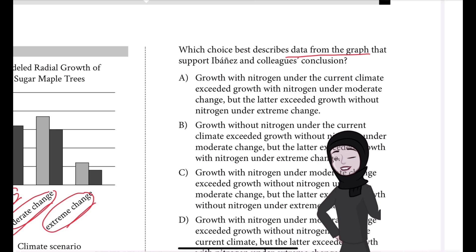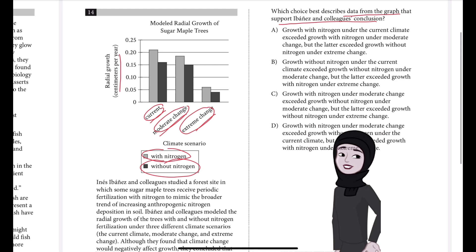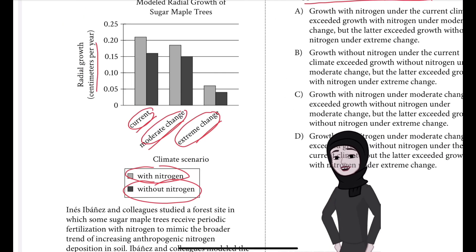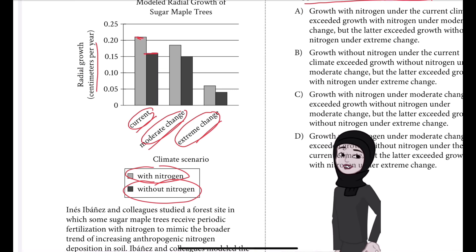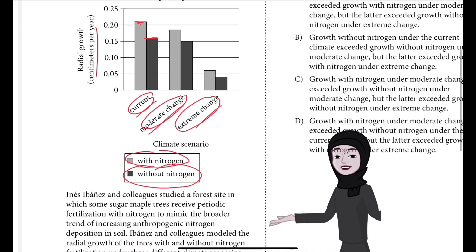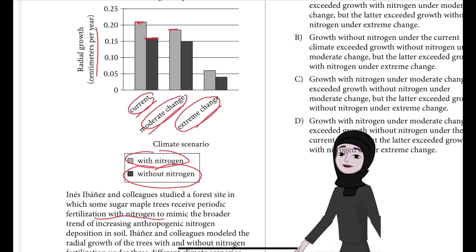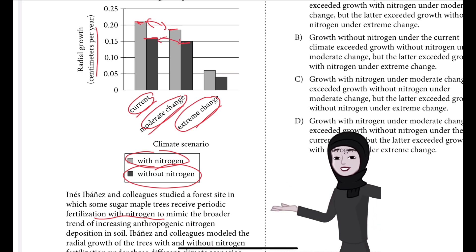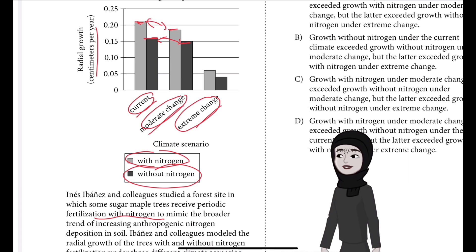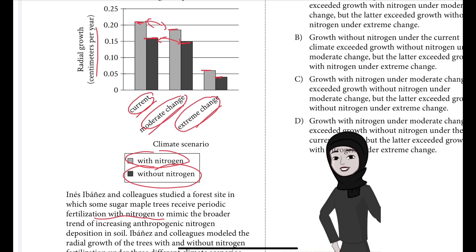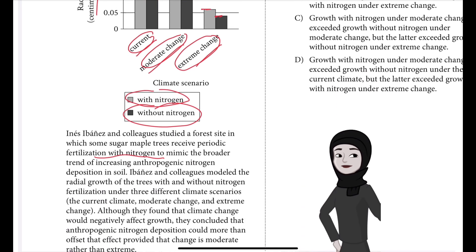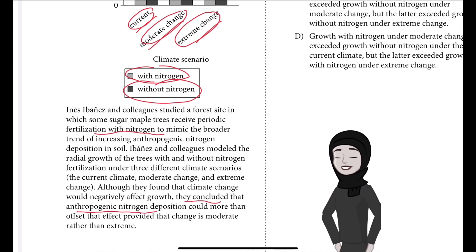We need to find which choice best describes data from the graph that support Ebanes and colleagues' conclusion. The current radial growth with nitrogen is high and without nitrogen is low. With moderate climate change and nitrogen, growth decreases a little compared to current, and without nitrogen it also decreases but not as much. Under extreme climate change, with nitrogen it is quite less, and without nitrogen it is also very less.